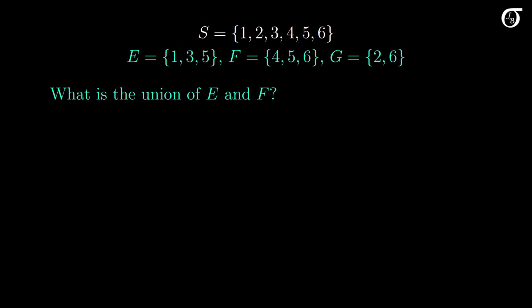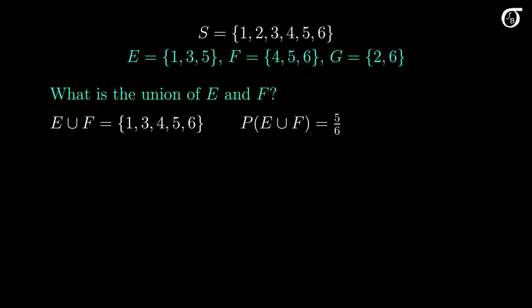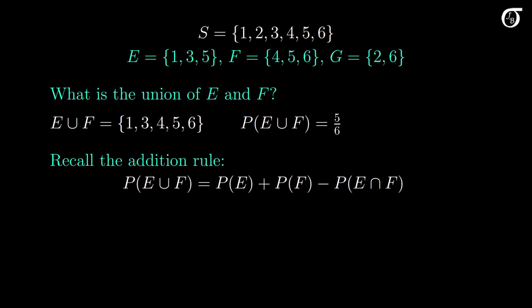Now suppose we'd like to find the union of events E and F. The union is the set of sample points in either E or F or both — 1, 3, 5 are in E, and 4, 5, 6 are in F — so E union F is {1, 3, 4, 5, 6}, with probability 5 out of 6. Alternatively, using the addition rule: the probability of E union F equals the probability of E plus the probability of F minus the probability of their intersection, which is 3/6 + 3/6 − 1/6 = 5 out of 6, the same result.